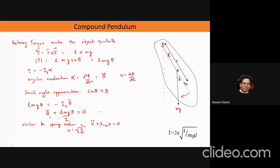For the compound pendulum we have θ̈ + (lmg/I_p)·θ = 0, which is again of the form of a simple harmonic oscillator. So ω = √(lmg/I_p). We already know the solution — we just need to remember this constant. Time period is defined as T = 2π/ω, so we get T = 2π√(I_p/mgl).